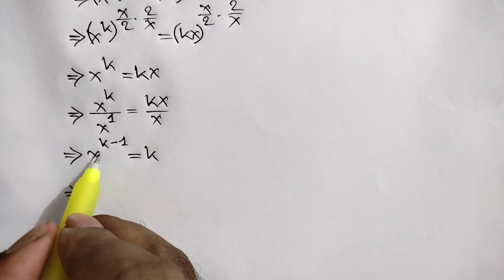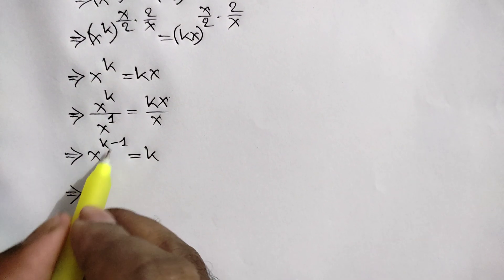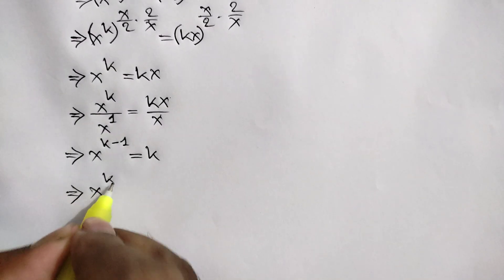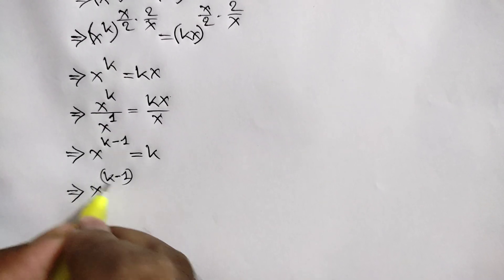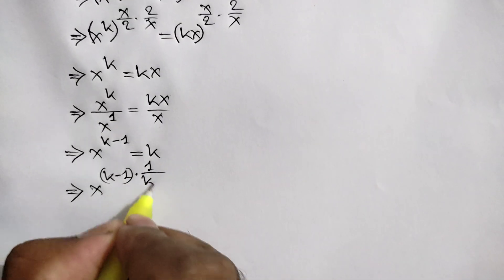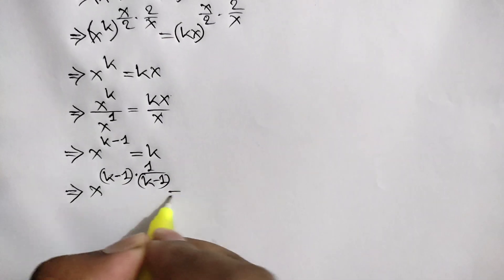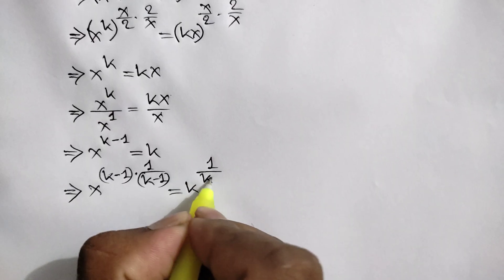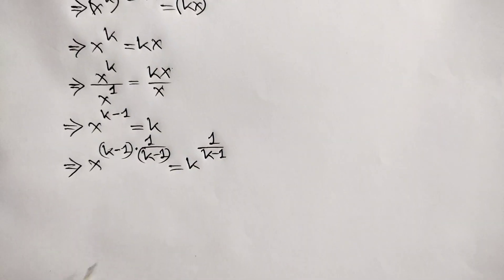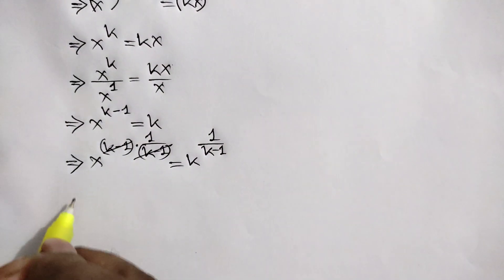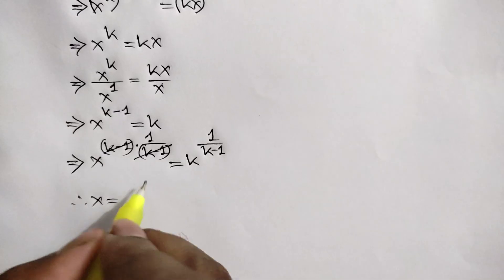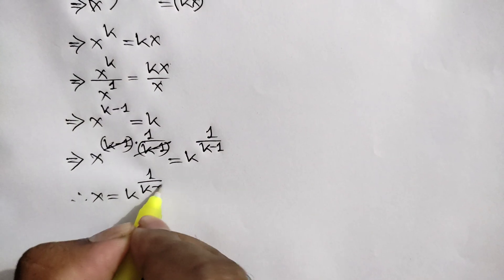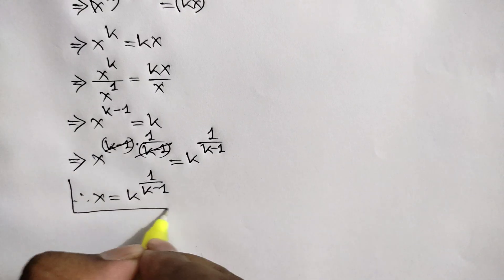Now multiplying both sides by the power 1 over k minus 1, we can write x to the power k minus 1 times 1 over k minus 1 is equal to k to the power 1 over k minus 1. So finally the value of x is equal to k to the power 1 over k minus 1.